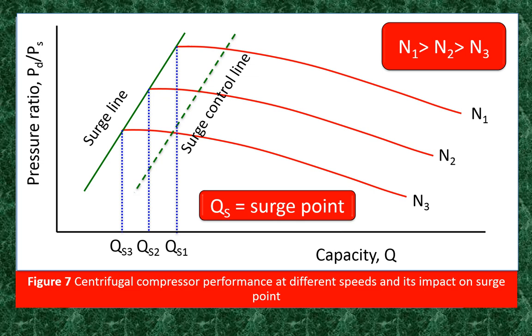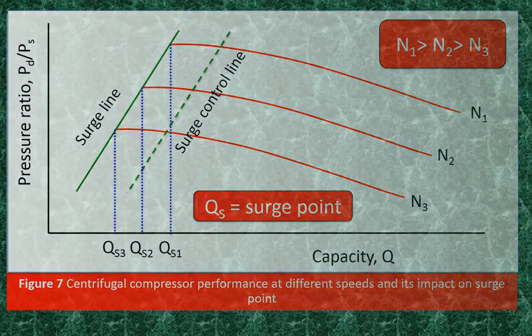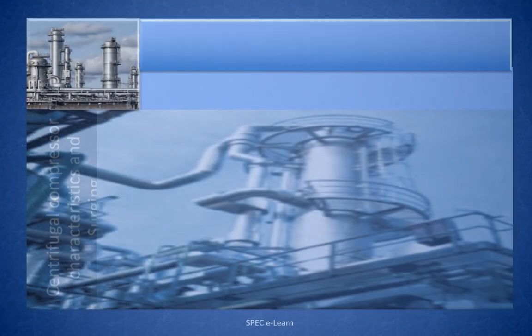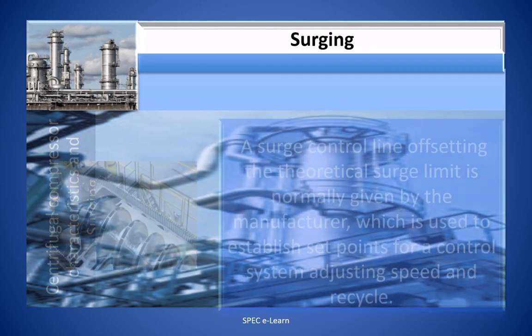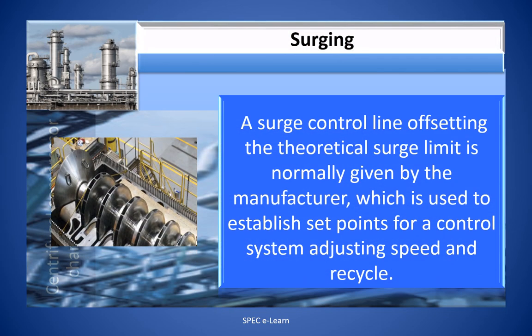This increases operating flexibility and widens the operating range. A surge control line offsetting the theoretical surge limit is normally given by the manufacturer, which is used to establish the set points for a control system adjusting the speed and recycle.